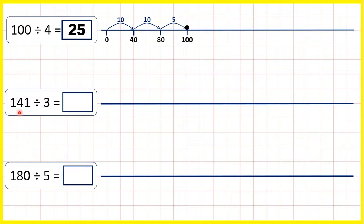Now 141 divided by 3. Again, we're not going to count in steps of 3. We can count in steps of 10 times 3, and 10 lots of 3 is 30. Another 10 lots of 3 means we add another 30, and 30 plus 30 is 60.